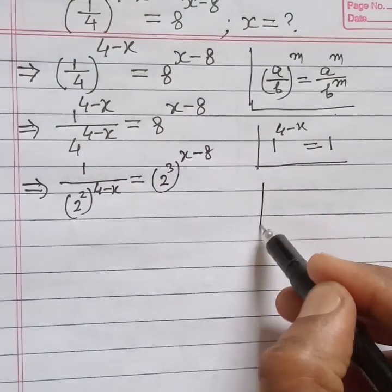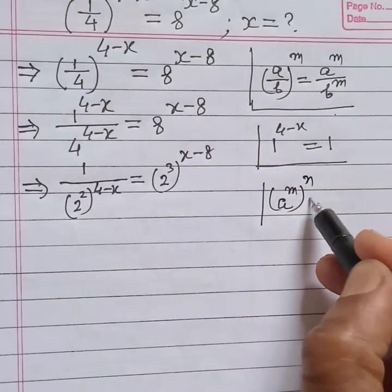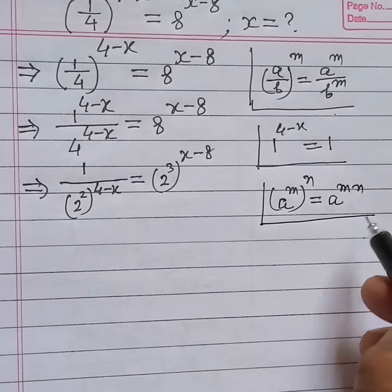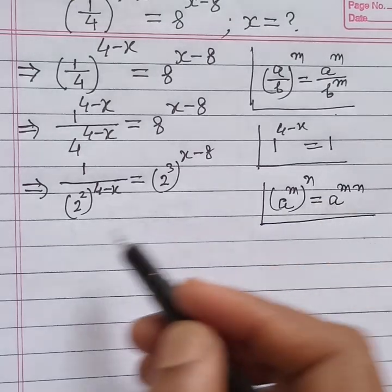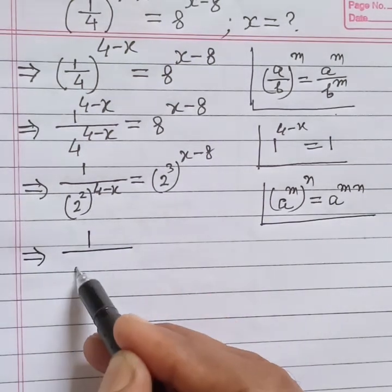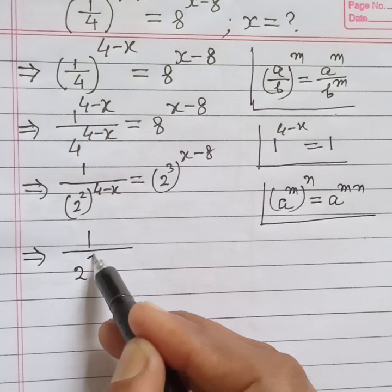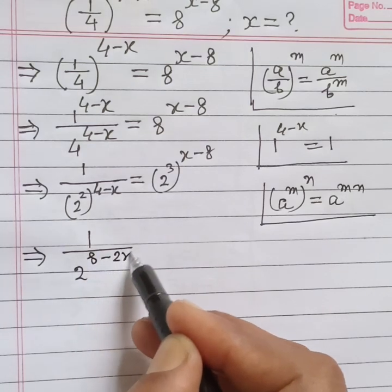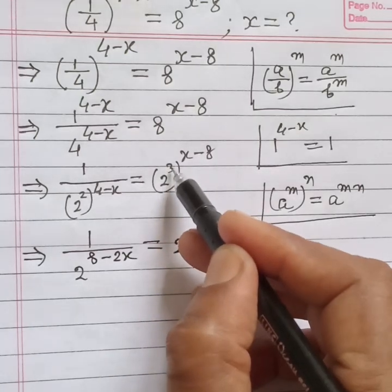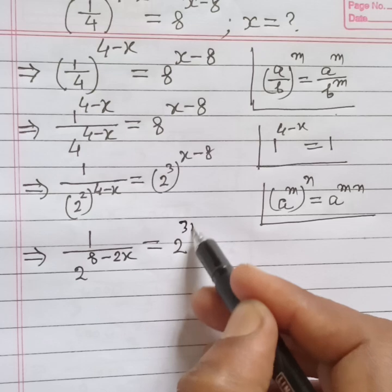According to laws of indices, a to the power m, whole to the power n, is equal to a to the power (m times n). Applying this rule, we get 1 by 2 to the power (2 times (4 minus x)), which is (8 minus 2x), is equal to 2 to the power (3 times (x minus 8)), which is (3x minus 24).